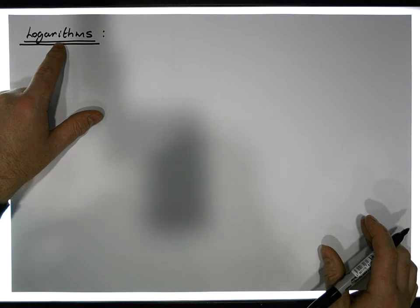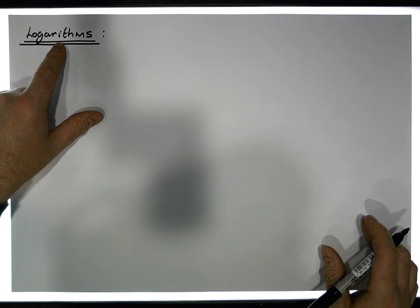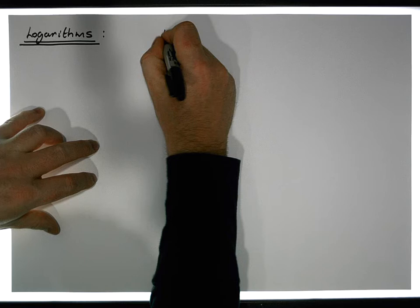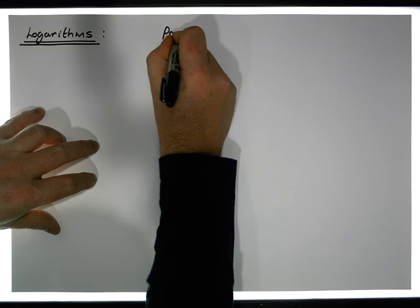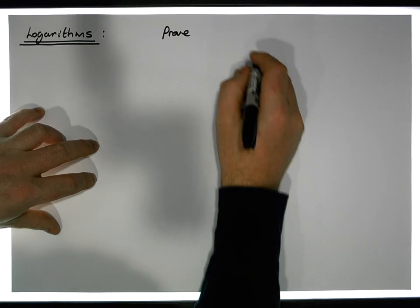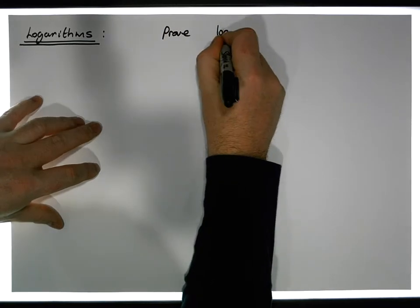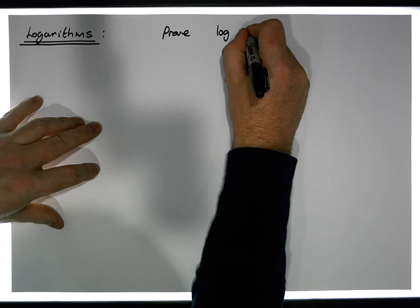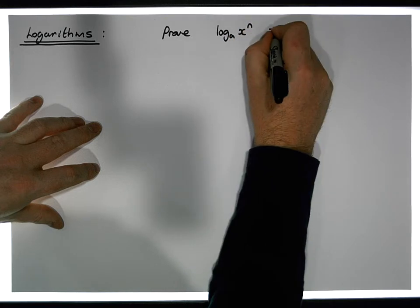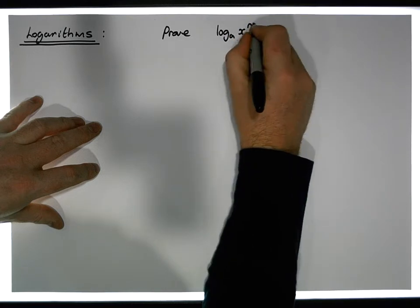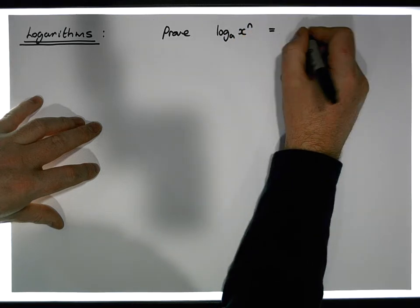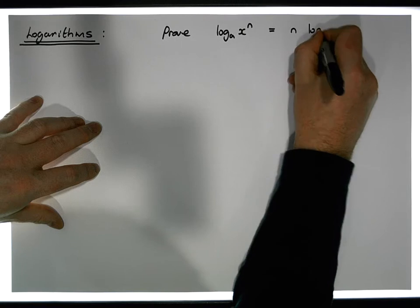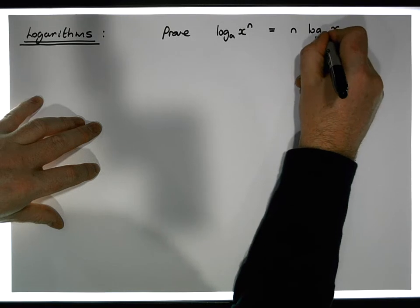In particular, what we're going to try to prove is that the log of x to the power of n, to the base a, is equivalent to n times the log of x to the base a.